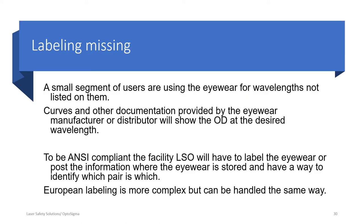A small segment of users sometimes use eyewear for wavelengths not listed on them — for example, eyewear rated to 780 nanometers used at 790 nanometers. Unless you have curves or documentation from the manufacturer showing protection at that wavelength and at what level, you cannot be guaranteed adequate protection. The legal liability of the eyewear manufacturer extends only to what is labeled on the eyewear — charts on their website do not suffice. You need to check with the manufacturer directly.